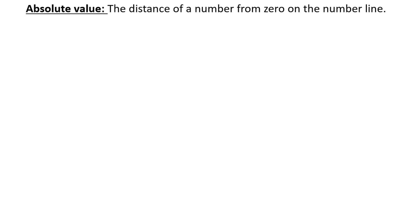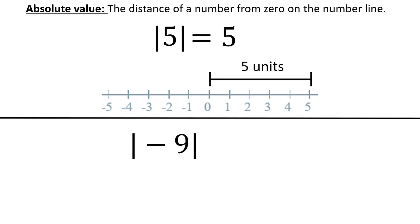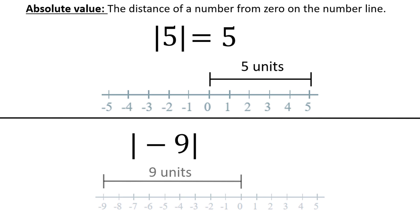For example, the absolute value of 5 is the distance from 5 to 0 on a number line, which is simply 5. The absolute value of negative 9 is the distance from negative 9 to 0 on a number line, which is simply 9.